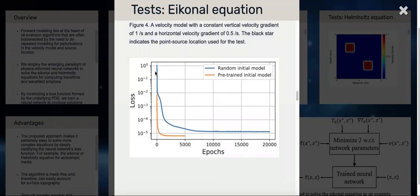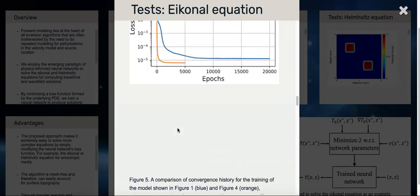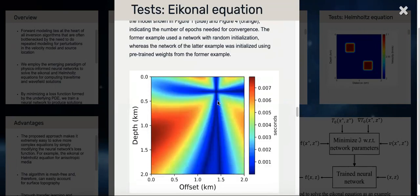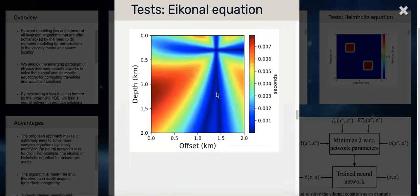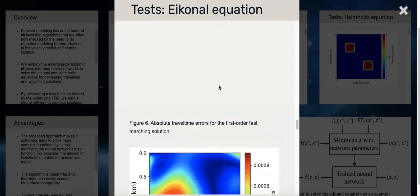This convergence curve shows that if we were to start with a randomly initialized model, it would take us a lot of epochs to converge. Whereas with a pre-trained initial model, we could converge much faster. Therefore we could speed up our computations and utilize the information we gained by solving the first problem. The solution accuracy that we get is not compromised. We still get very good accuracy, as shown here for the physics-informed neural network, whereas this is the corresponding one for the fast-marching method.